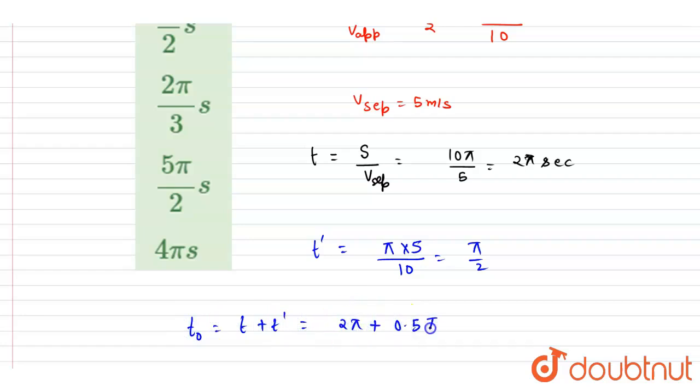plus 0.5π, it will be 2.5π. And this will be the answer of this question. Now you can check for the option here. C is the correct one. Thank you.